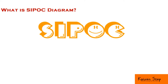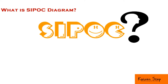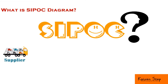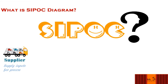Before we proceed, we must know more about the SIPOC abbreviation. The first letter is S, which stands for Supplier — the person or organization that provides the inputs to your process. Simply, these are the people who supply the inputs, as every input should have a supplier.